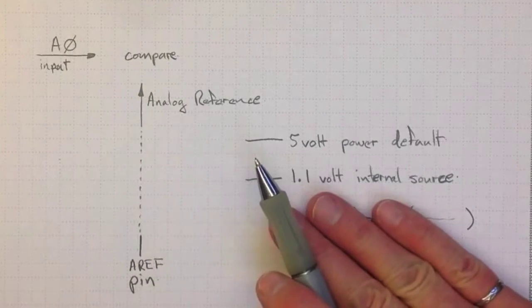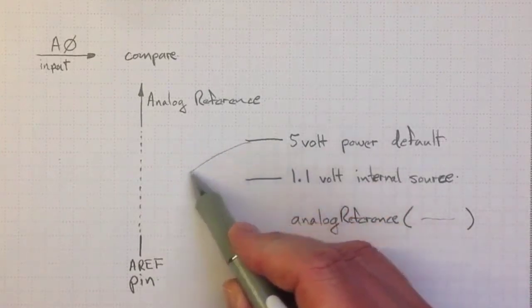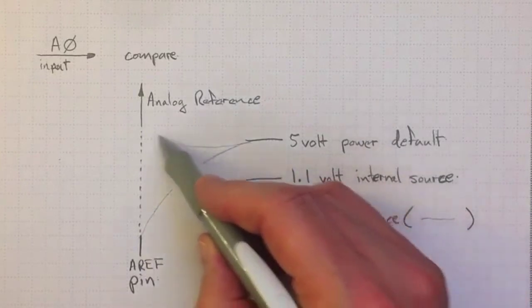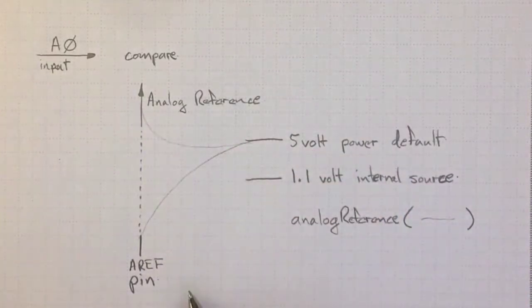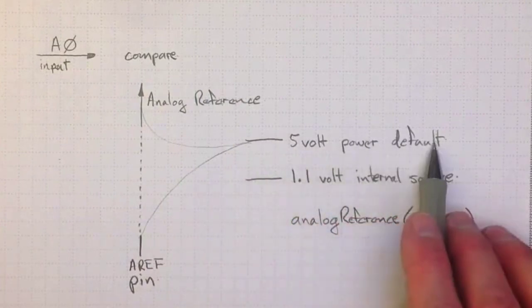By default, if you don't even call it at all, the 5 volt power supply of the Arduino will be connected to the AREF pin and to the analog reference, and your input will be compared to the 5 volt power provided on the Arduino.